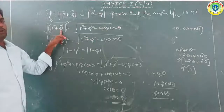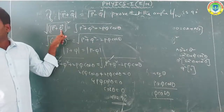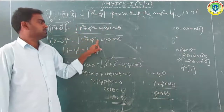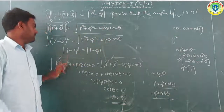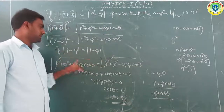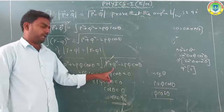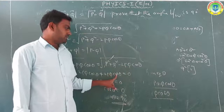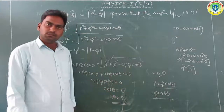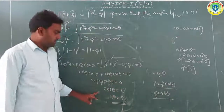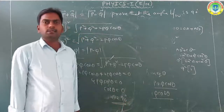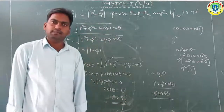P² cancels, Q² cancels, leaving 2PQ cos theta + 2PQ cos theta = 0, so 4PQ cos theta = 0. Since P and Q are not zero, cos theta = 0, therefore theta = 90 degrees. Hence proved, the angle between the vectors is 90 degrees.